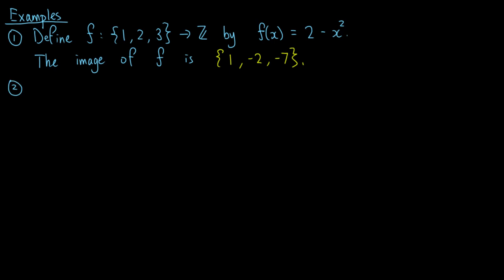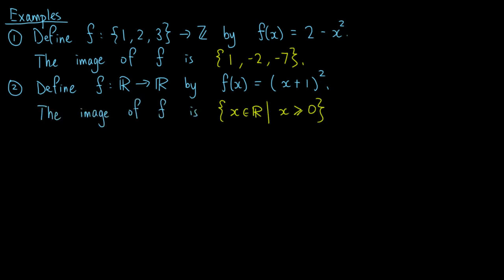Secondly, we define the function f from the real numbers to itself by f of x equals the square of x plus 1. The image of f is the set of real numbers x such that x is greater than or equal to 0.